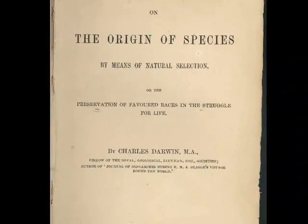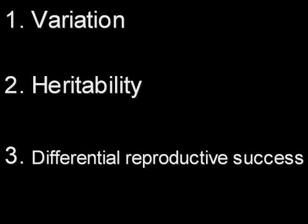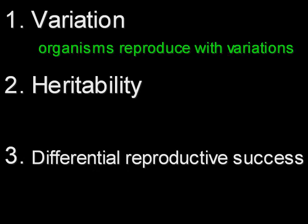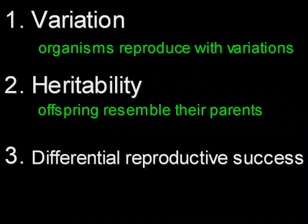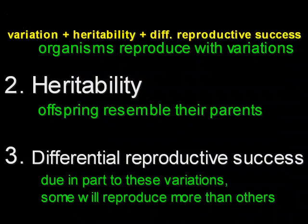Evolution by natural selection is based on three simple ideas: 1. Variation. 2. Heritability. 3. Differential reproductive success. In other words, organisms reproduce with variations, those offspring tend to resemble their parents, and some of them will reproduce more than others. If you've got those, you've got evolution.